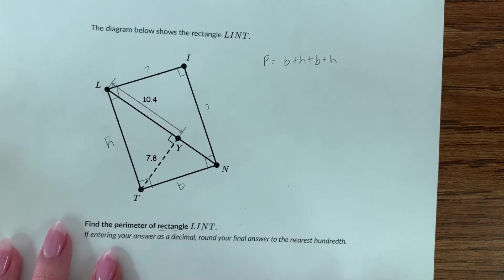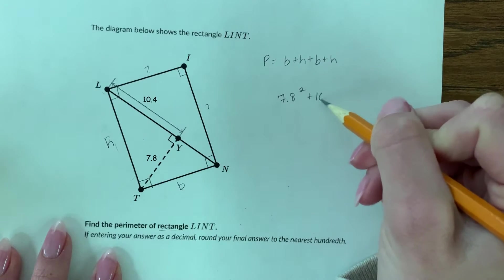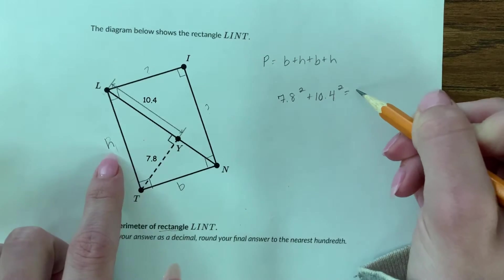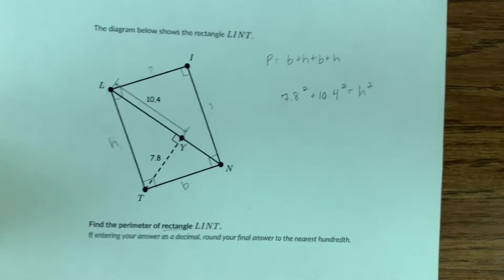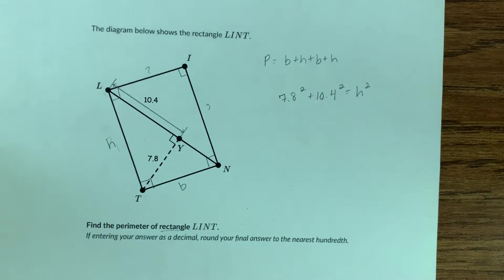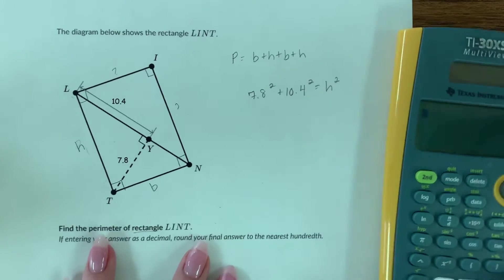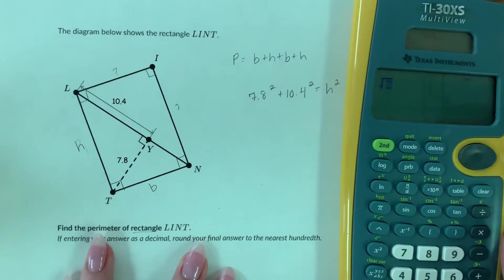We're going to do 7.8 squared plus 10.4 squared equals the hypotenuse squared. Let me grab a calculator. I usually put that in my calculator pretty quickly. I know I'm going to end up square rooting it, so I just start with a square root and then I just put that in there.